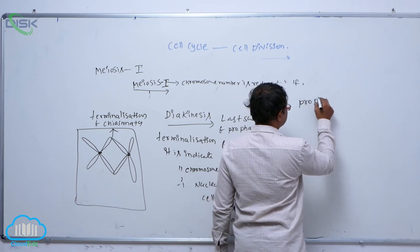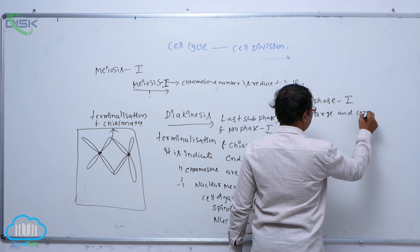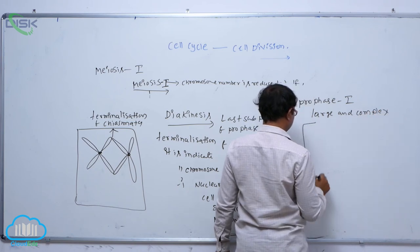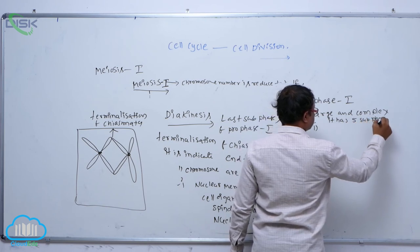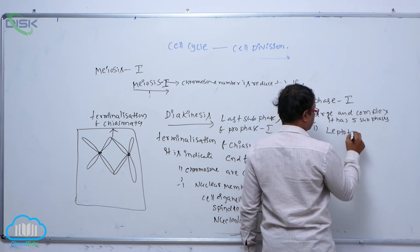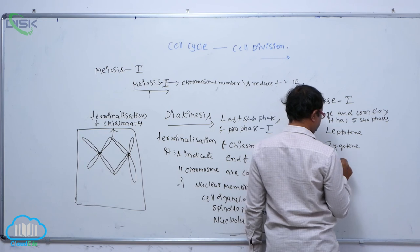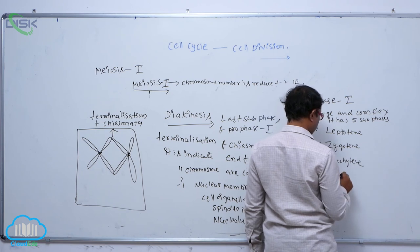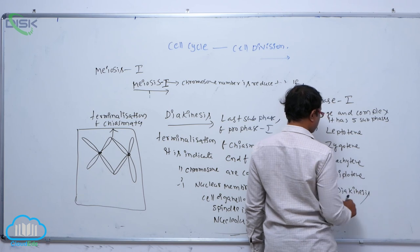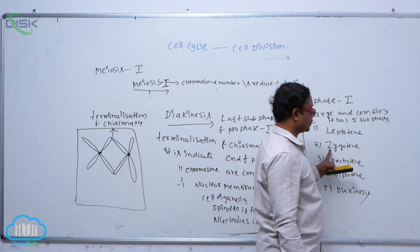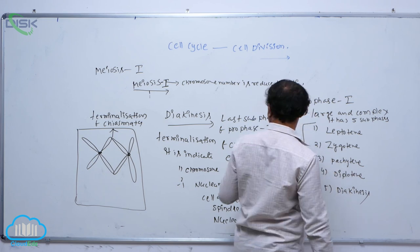Prophase I is large and complex. It has five subphases. The first one is leptotene, identified by compaction of chromosomes. Second is zygotene, which is synapsis. Third is pachytene, which is crossing over. Fourth is diplotene, which is desynapsis. Fifth is diakinesis, which is terminalization of chiasmata. So prophase I is now completed.